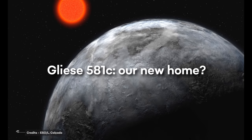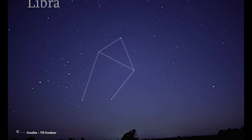Gliese 581c. Our new home? In the Southern Hemisphere, between the brilliant constellations of Virgo and Scorpio, sits the Libra constellation.